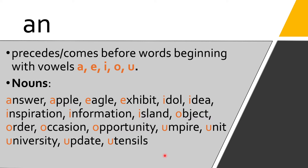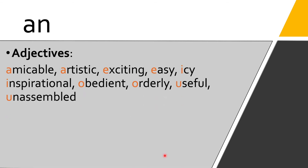There are so many nouns that begin with vowels. Next, we have adjectives that begin with vowel letters. Read this with me: amicable, artistic, exciting, easy, icy, inspirational, obedient, orderly, useful, unassembled — and a whole lot more. There are so many adjectives that begin with vowel letters.